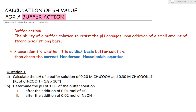Next we want to look at the calculations of pH value for a buffer action. In your previous example, questions 1, 2, 3, that was to calculate the pH value for a buffer solution before anything happens. So here, we want to learn more about the buffer action and its calculation. A buffer action refers to the ability of these solutions to resist the pH change upon additions of a small amount of strong acid or strong base.